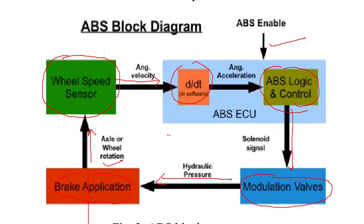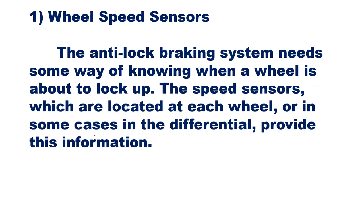The anti-lock braking system needs some way of knowing when a wheel is about to lock up — some signal should be given to the braking system. The speed sensors, which are located at each wheel or in some cases in the differential, provide this information. The wheel speed sensors provide this type of signal to the anti-brake locking system.